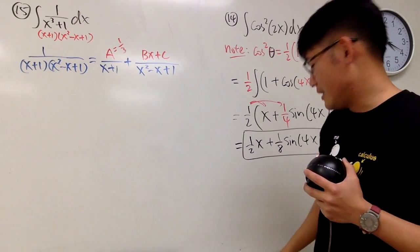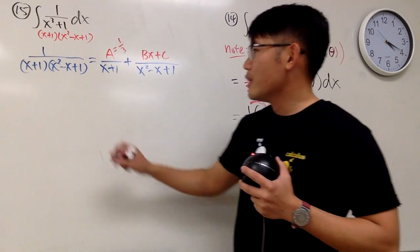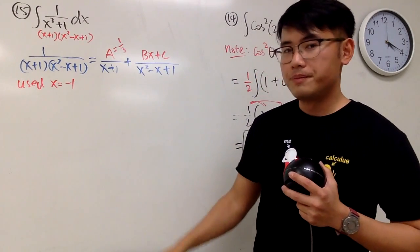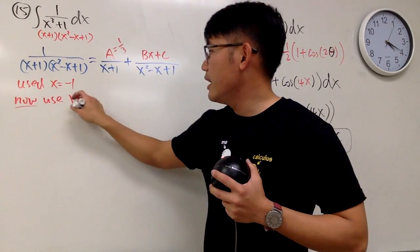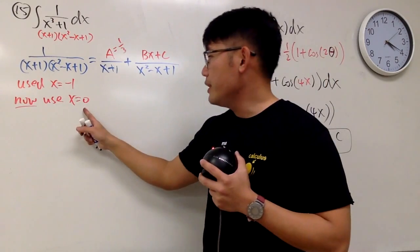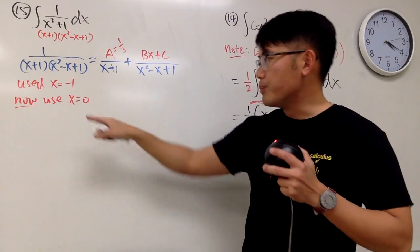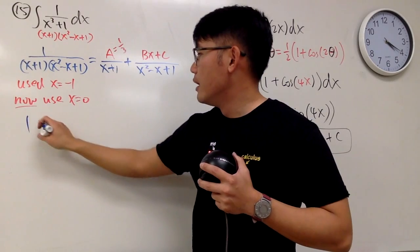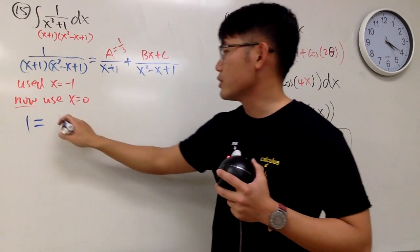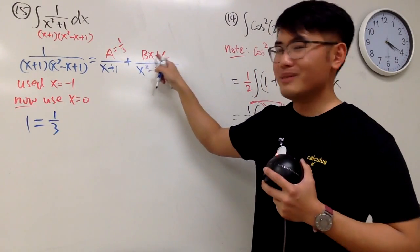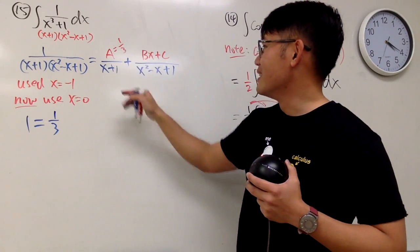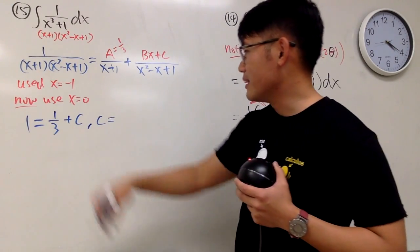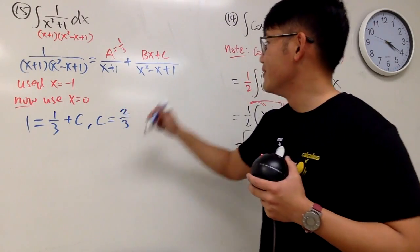We also have to figure out B and C. We can plug in whatever x values we want now. We used x equals negative 1 already, so we cannot use that anymore. Let's use x equals 0. When you put x equal to 0, on the left-hand side you get 1 over 1 times 1, which is 1. On the right-hand side, A over (x+1) gives 1 third, and the B times x term vanishes, leaving plus C over 1. So 1 equals 1 third plus C, giving C equals 2 thirds.